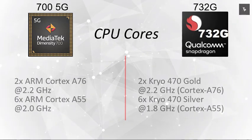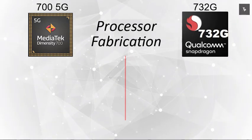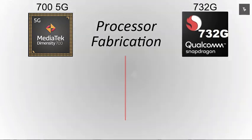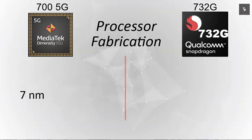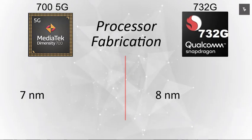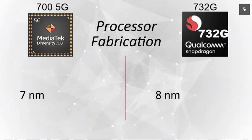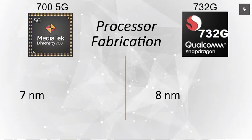Moving on to the processor fabrication size: the Dimensity 700 uses a 7nm process, which is 28% more efficient than the Snapdragon 732G at 8nm.